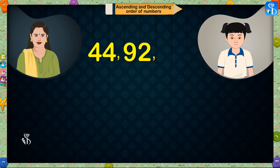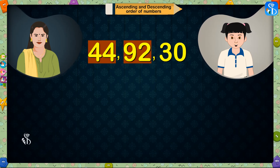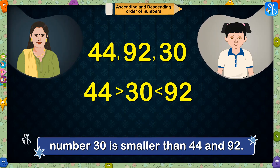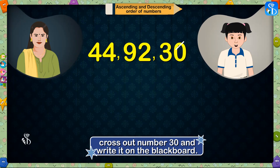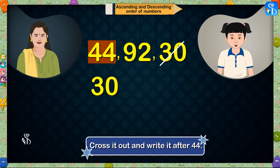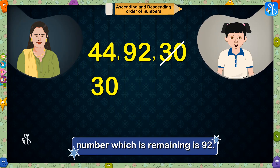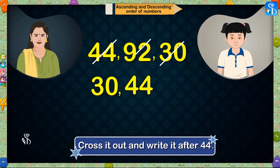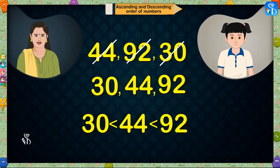The next numbers are 44, 92, and 30. Who will solve this? Student: In 44, 92, and 30, number 30 is smaller than 44 and 92. So, first we will cross out number 30 and write it on the blackboard. Now, remaining are 44 and 92. Of these two numbers, 44 is the smaller number. So, cross it out and write it after 30. The third number remaining is 92. So, cross it out and write it after 44. Teacher: Correct. In this way, we have written the numbers in an ascending order.